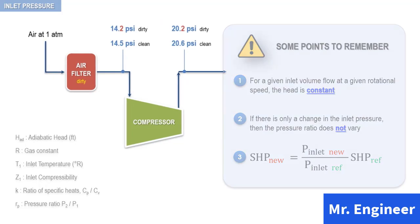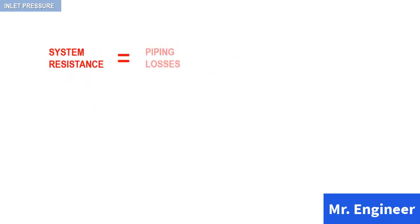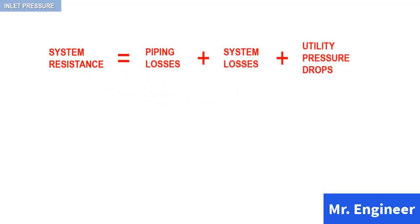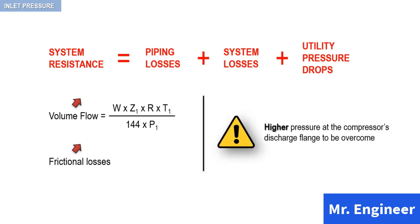In this example, we have ignored the effects of system resistance downstream of the compressor discharge flange. For many applications, system resistance is small compared to the total pressure requirements of the compressor and will therefore have minimal effect on the analysis. In some applications, however, system resistance effects are large and will actually define the compressor operation. We can view system resistance as the sum of piping and system losses and utility pressure drops. As the volume flow through the system increases, frictional losses increase and require a higher pressure at the discharge of the compressor to be overcome.